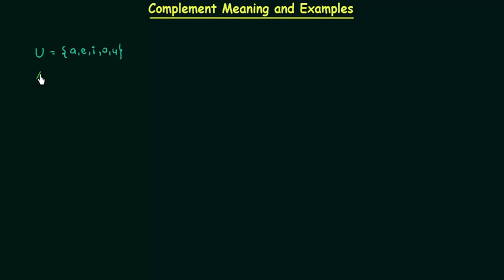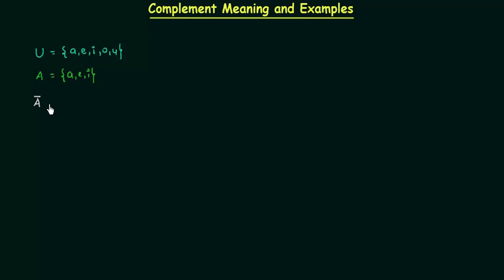Let's take one set A. This is definitely a subset of U and the elements are a, e, i. These are the elements of A. Now we want to find out the complement of A. I will use two notations for complement: first one is A-bar and the second one is A-prime. So let's find out the complement of A.